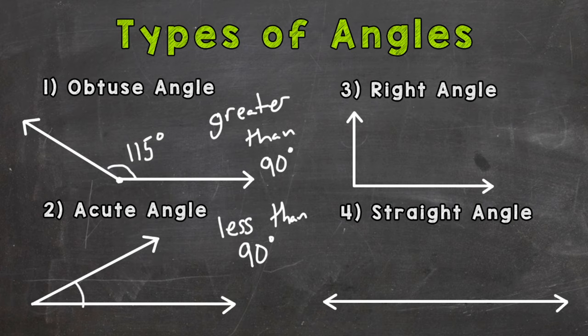For example, here's the common point that these rays share. The rays create that angle, and we're going to say this is a 45-degree angle. Is that less than 90 degrees? Yes, so it's an acute angle.